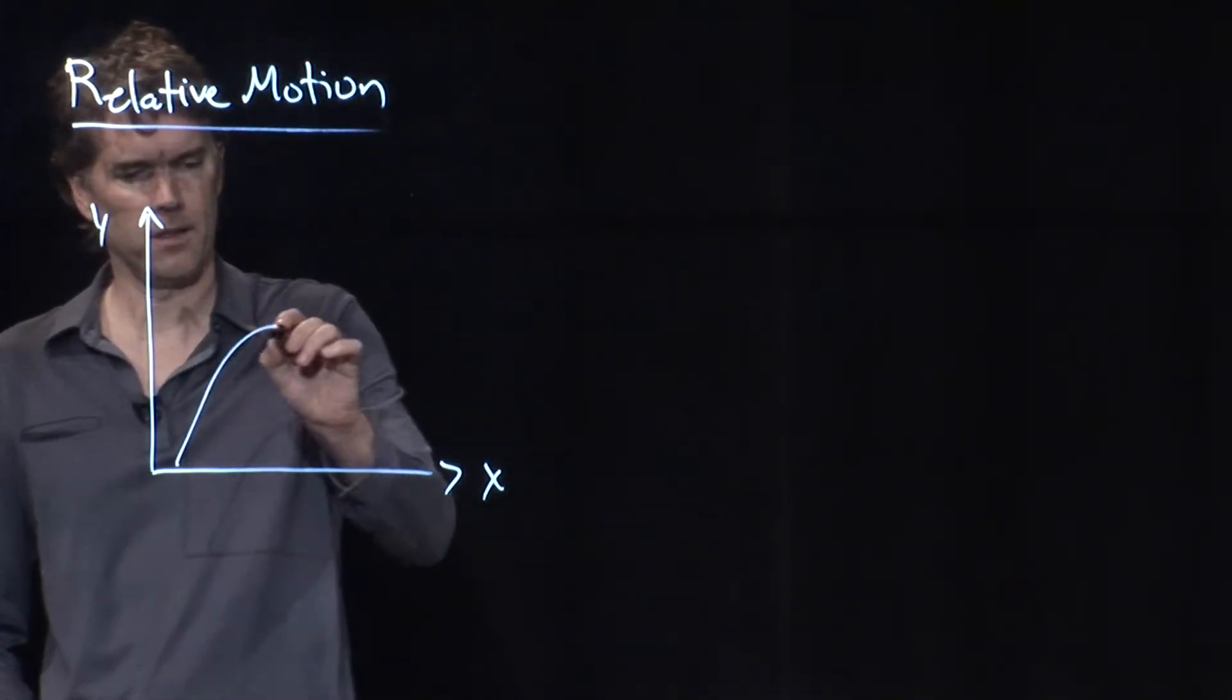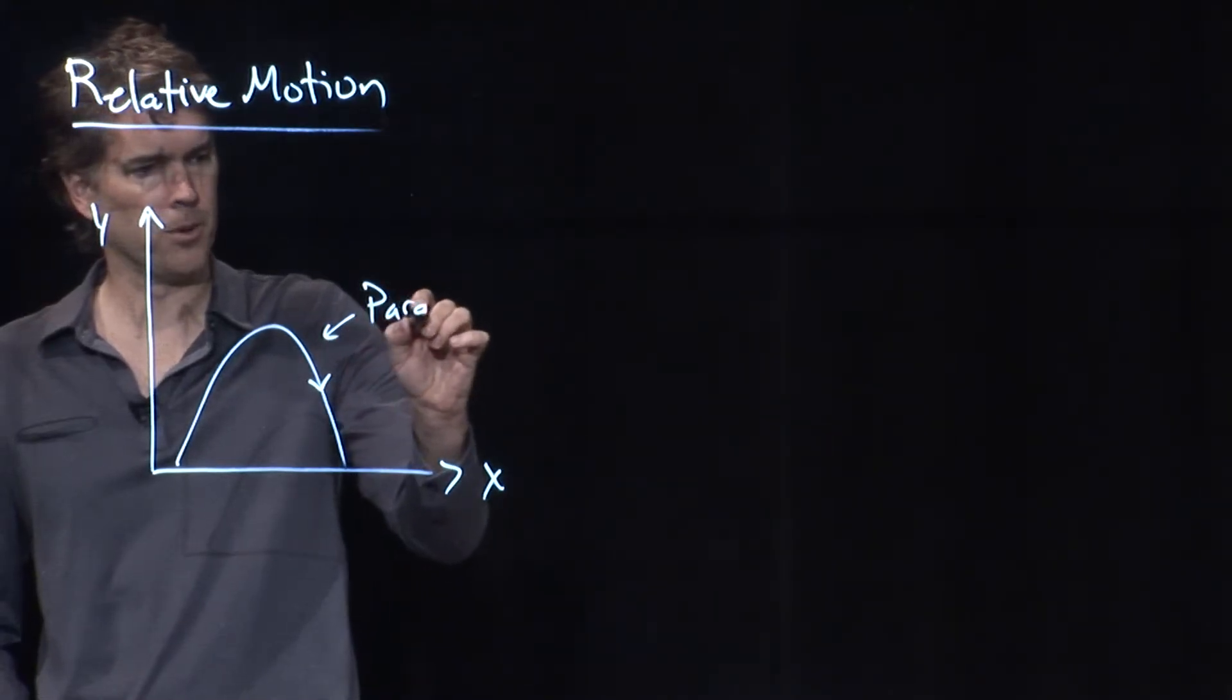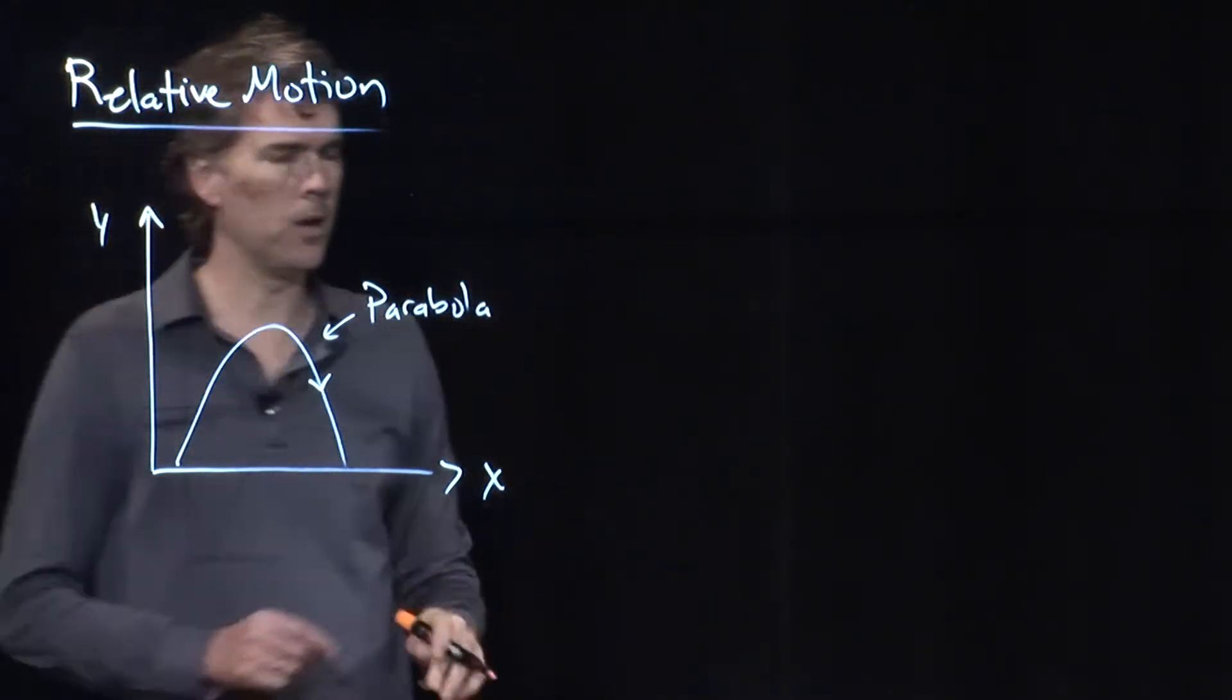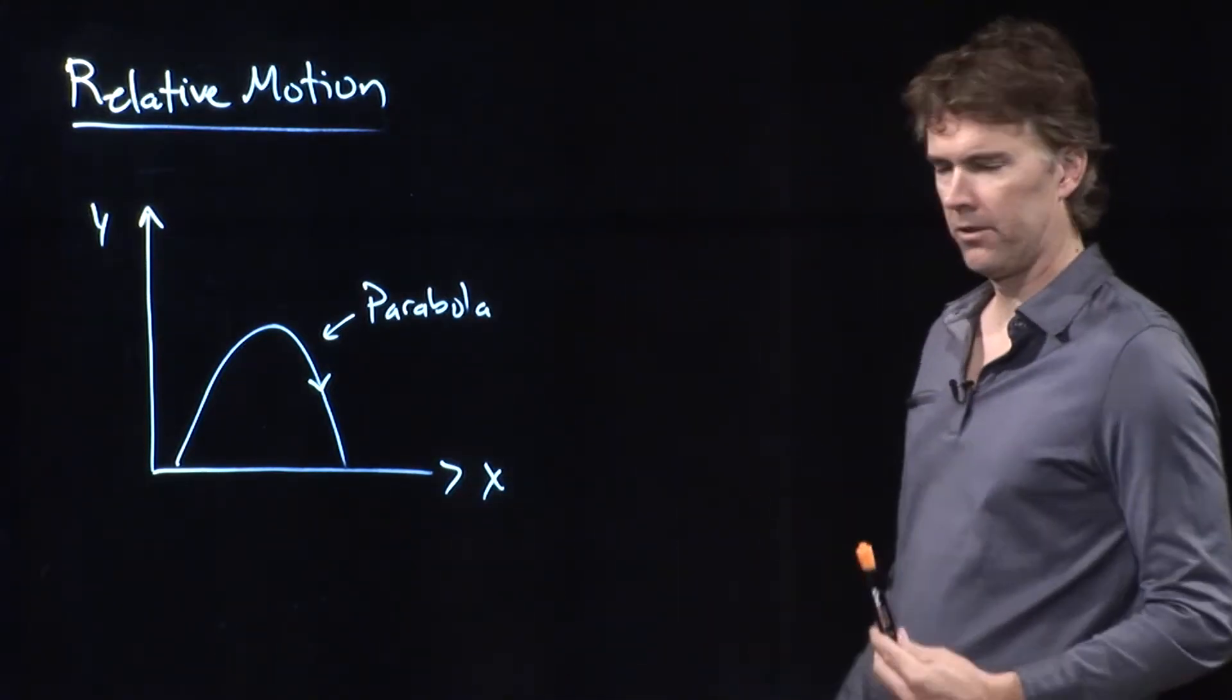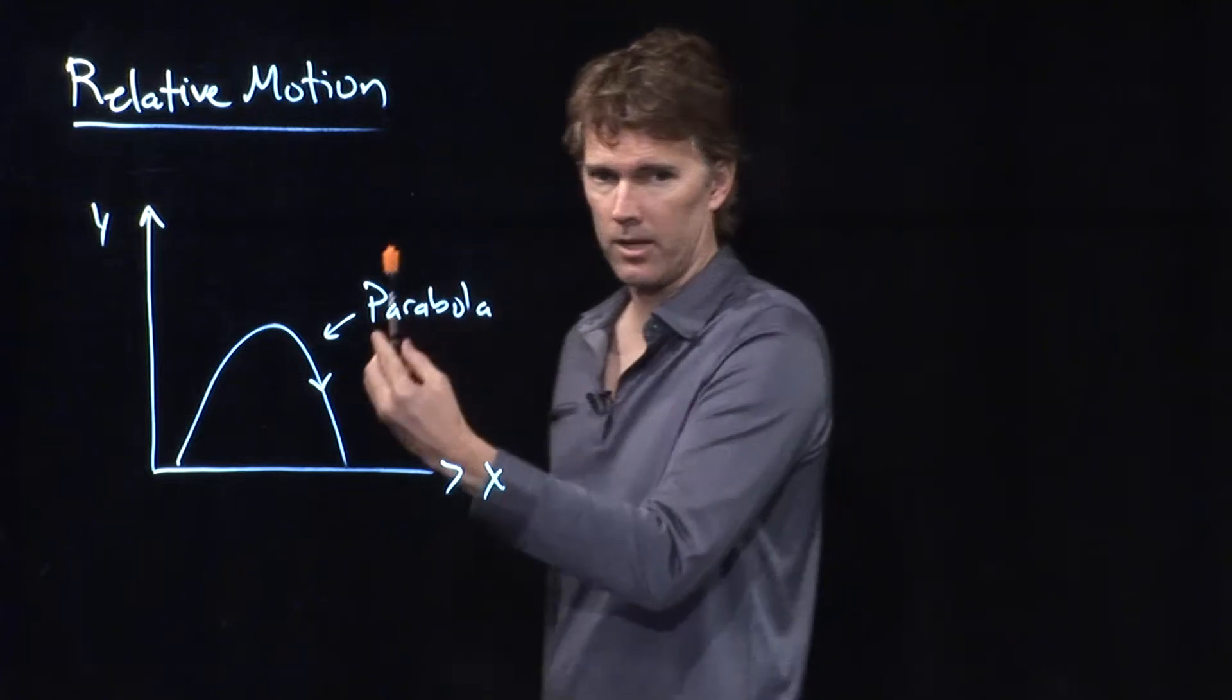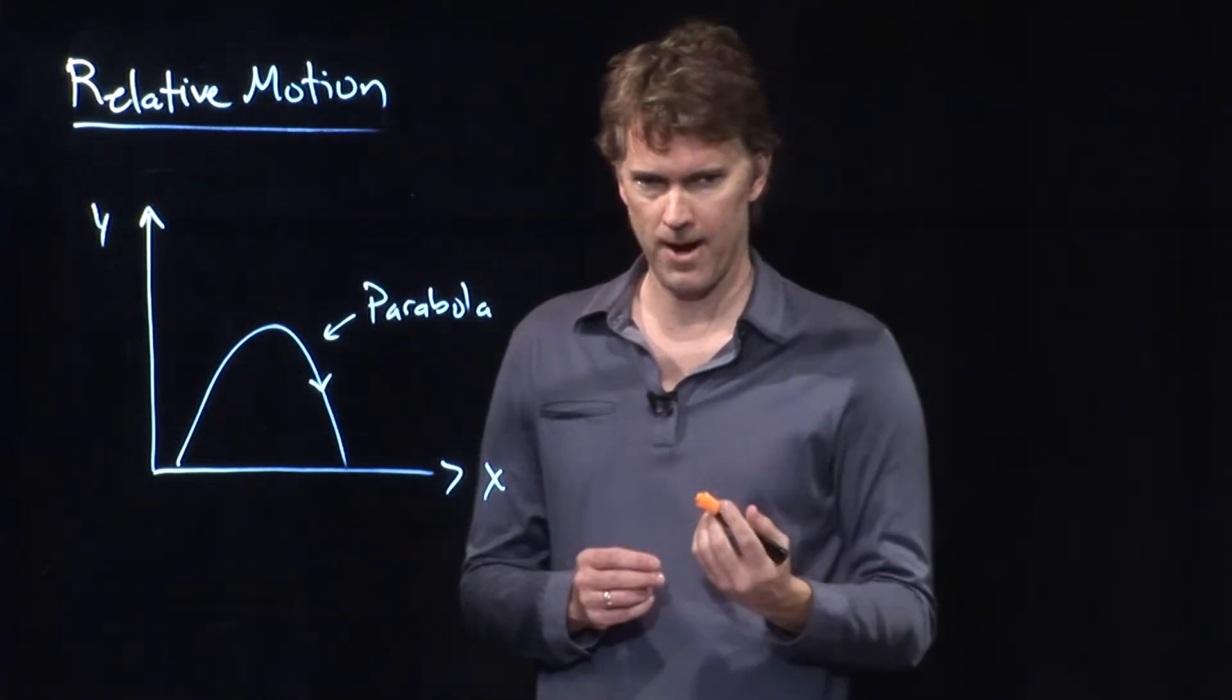So, it would look something like that. Like you said, it is a parabola. And once that object leaves my hand, it is, of course, in free fall. The only thing acting on it is gravity, and we know that projectile motion maps out a parabola.